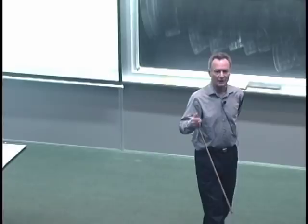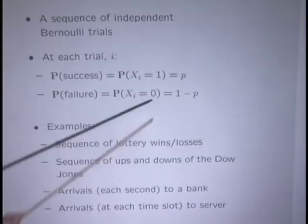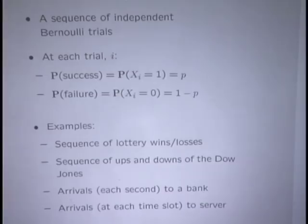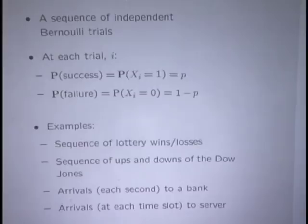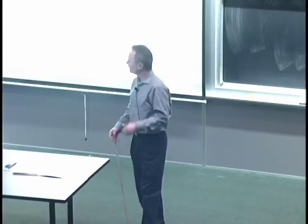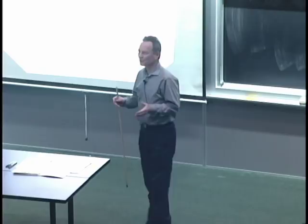There are two assumptions: the independence assumption, and that p — the probability of success — is constant. In the bank example, if you stand outside at 9:30 in the morning, arrivals happen at a certain rate; at 12 noon, they're more frequent. So the constant-p assumption may not hold over the whole day. But for a short interval, like 10 to 10:15, it's a good approximation. We'll stick with the assumption that p is constant and doesn't change with time.